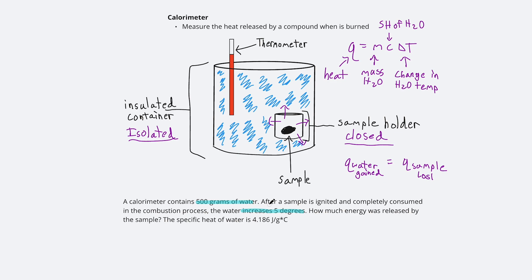So we set up Q equals 500 grams times C, and C is given to us. So it's 4.186 joules per gram per degree Celsius times the change in temperature, which we are given as 5 degrees.